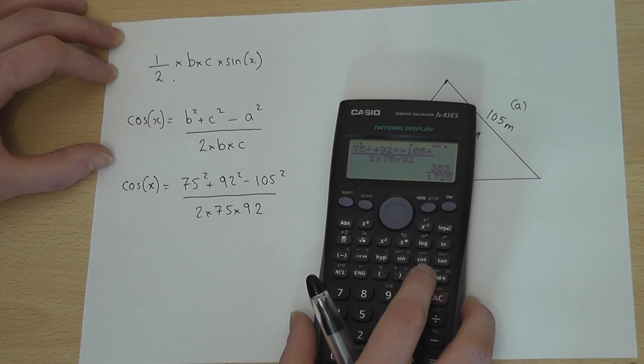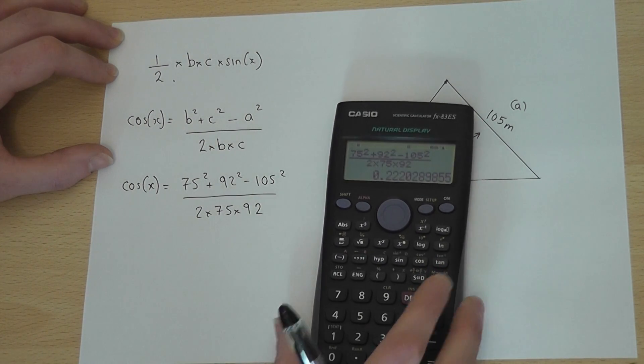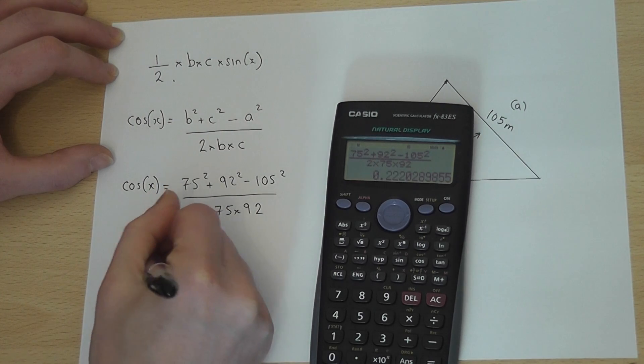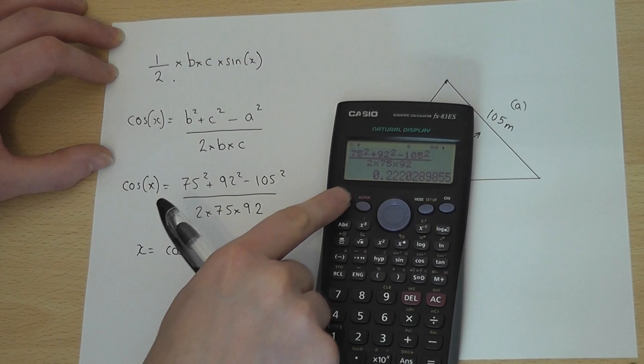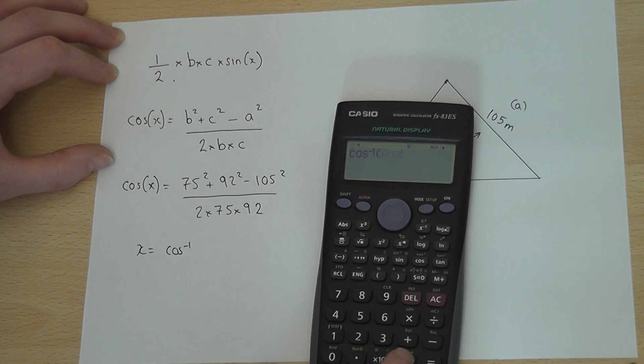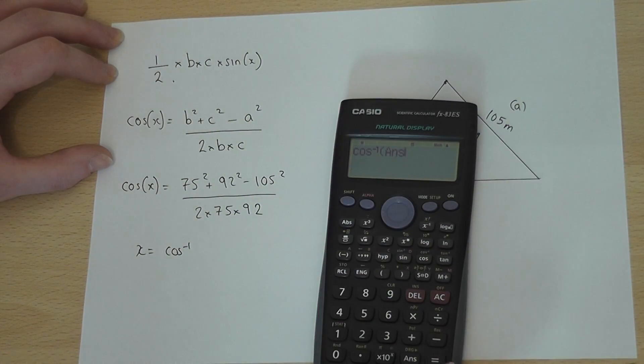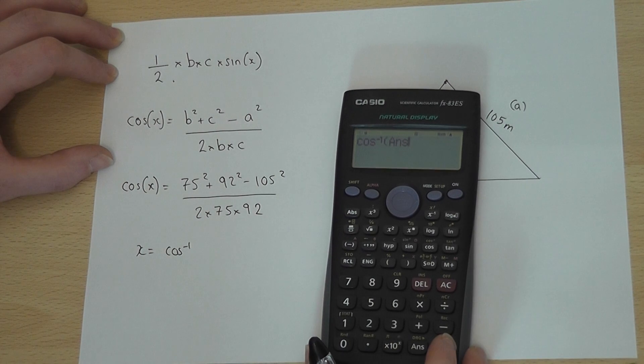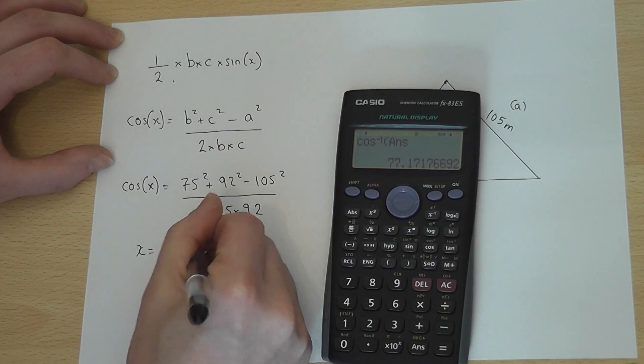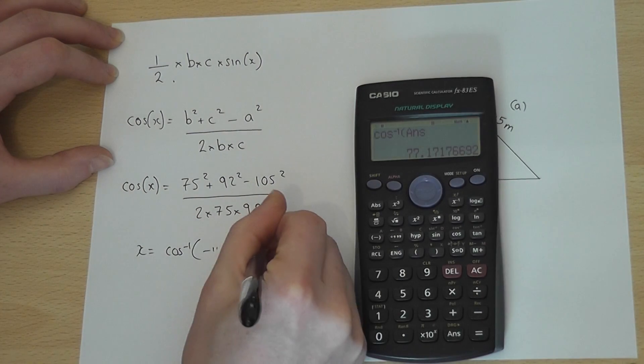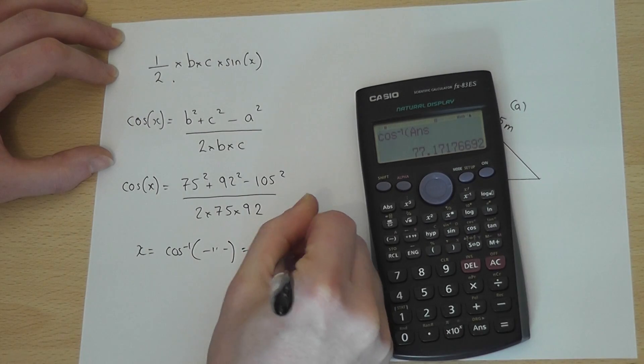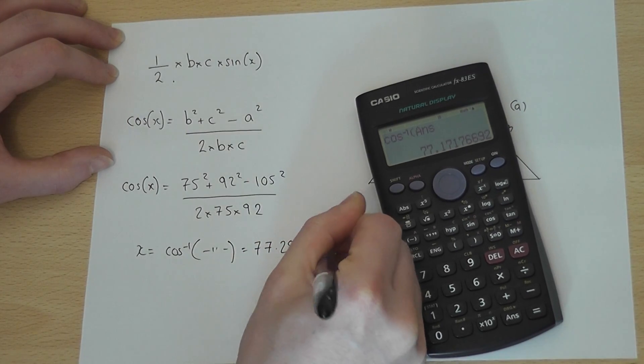that gives me cos of X equals... So to find X, I'll do the inverse cos of this. So if I press Shift Cos, and just press Ans, it will use the memory value of 0.222. Press Enter, and I get X is equal to 77.2 degrees to 3 significant figures.